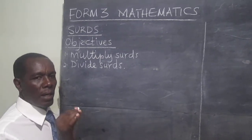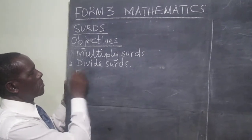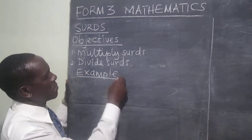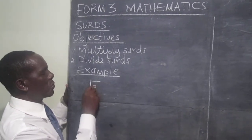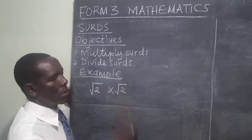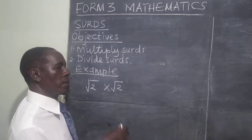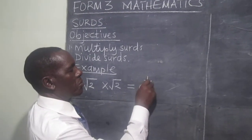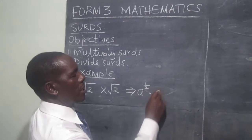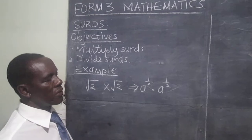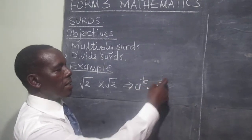We want to start with a third multiplied by itself and see what we will get. When we multiply, for example, the square root of two by the square root of two, we need to remember the laws of indices, where we are saying a raised to a half compared to a raised to a half multiplied by a raised to a half. And from the laws of indices, these two halves will be added. When the base is the same, we add the indices.